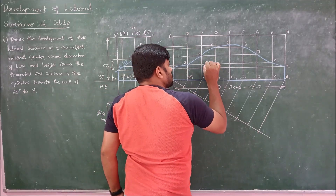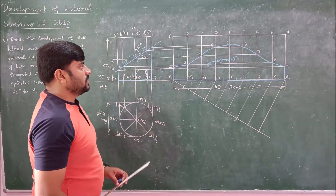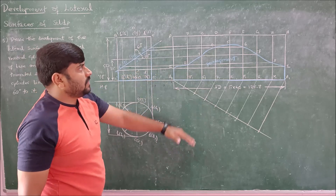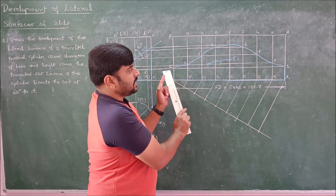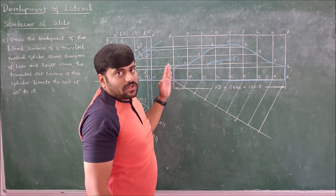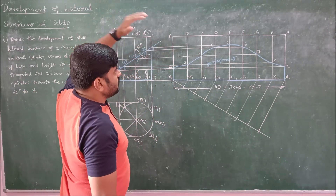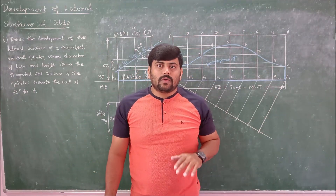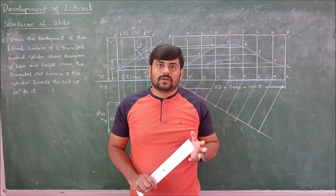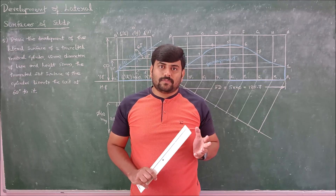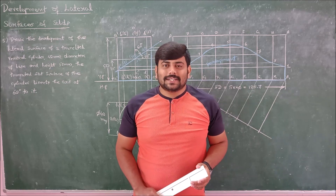This is the development of the cylinder. The top piece is cut away, and the bottom piece is what is required. If you fold it, align the edges properly, and join using welding, brazing, or soldering in sheet metal, you will get the cylinder of this truncated shape. This completes the parallel line method of development, under which we have addressed development of prism, cube, and cylinder. Thank you all.